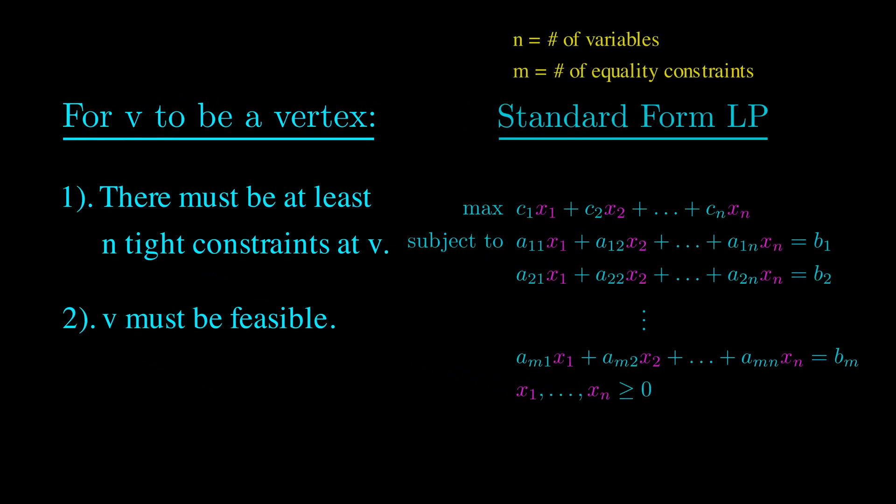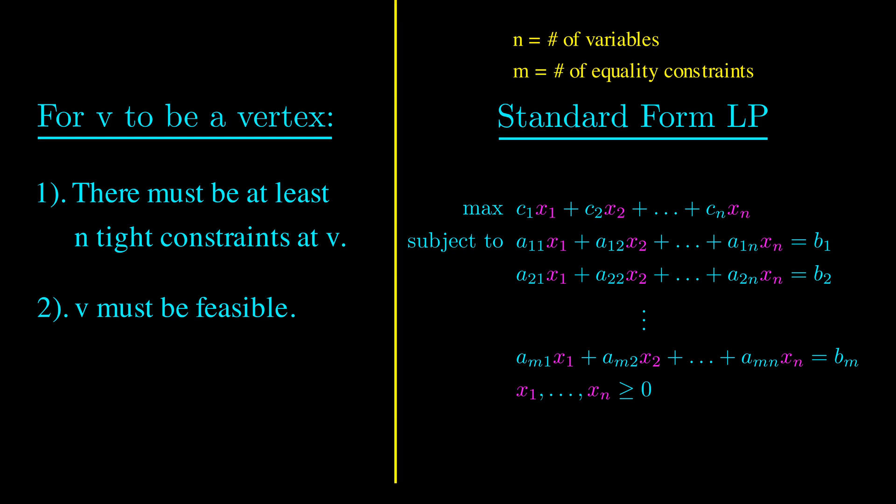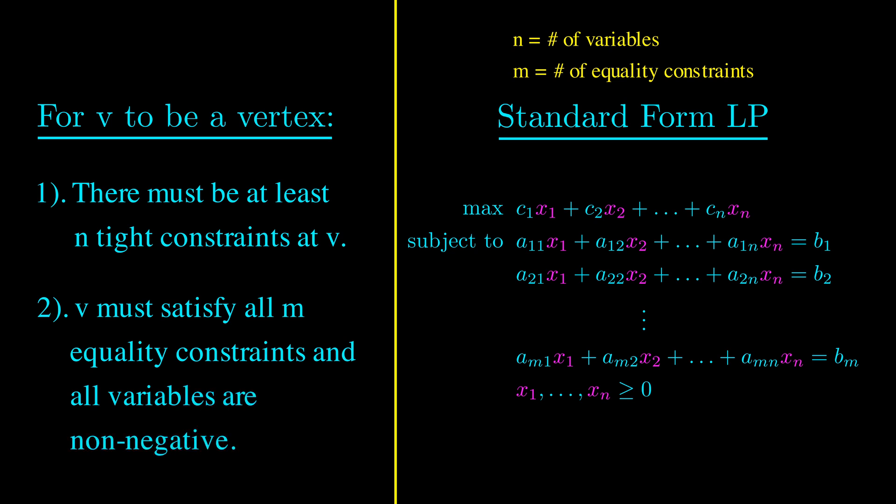Recall the two conditions we need for point v to be a vertex. How do these conditions apply to standard form linear programs? For the second condition, that v is feasible, we can rephrase it as, we must satisfy all m equality constraints, and all variables are non-negative.